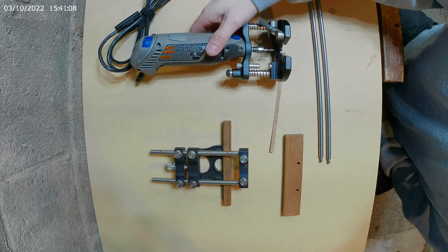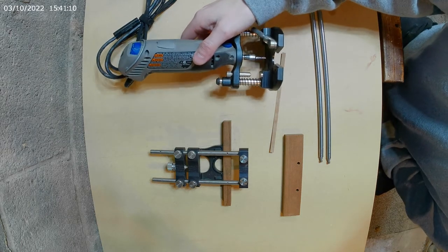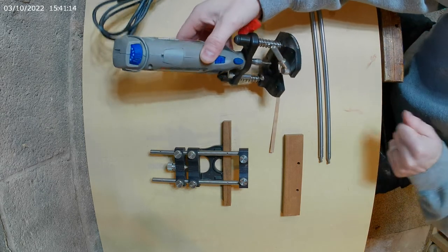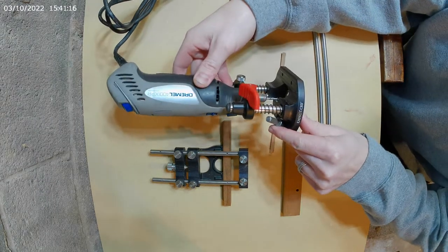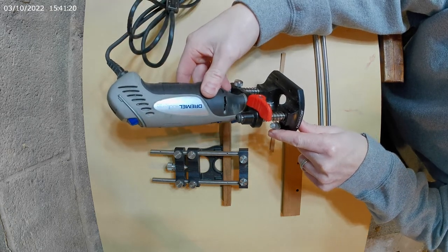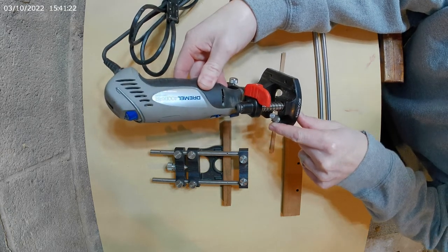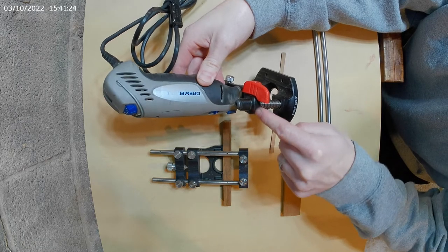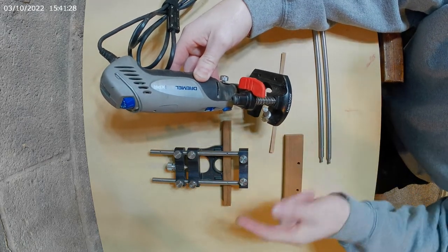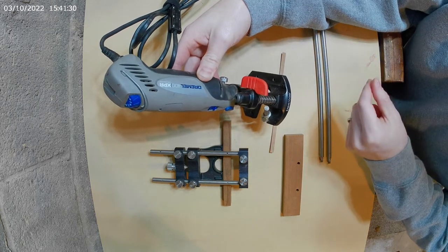It is just a miniaturized version of a router plunge base that is compatible with Dremels. Now this Dremel in particular that I've used, this is a Dremel 400 XPR. I think it's probably 10 years old. This will work with newer ones. You can get cordless Dremels now.